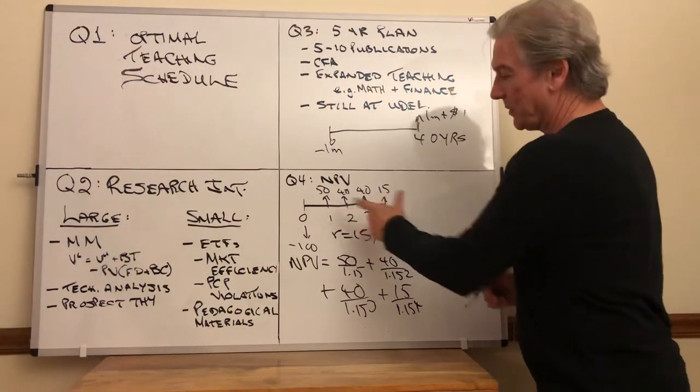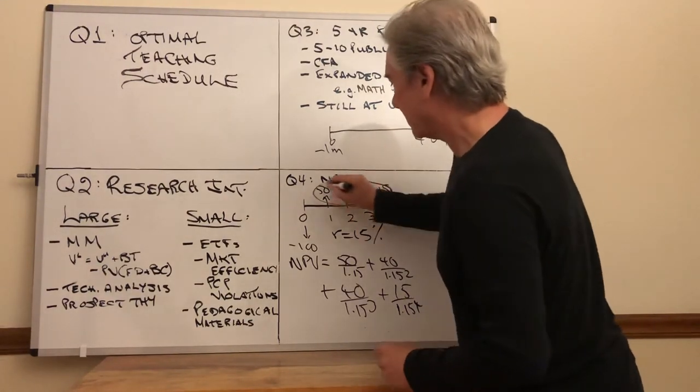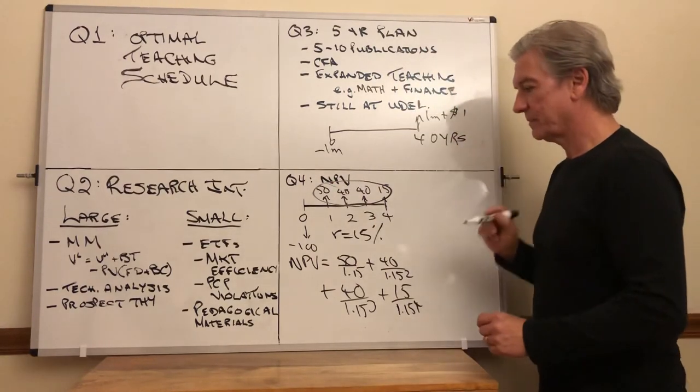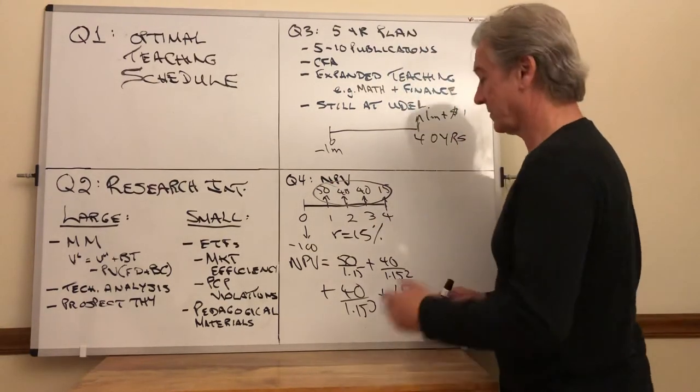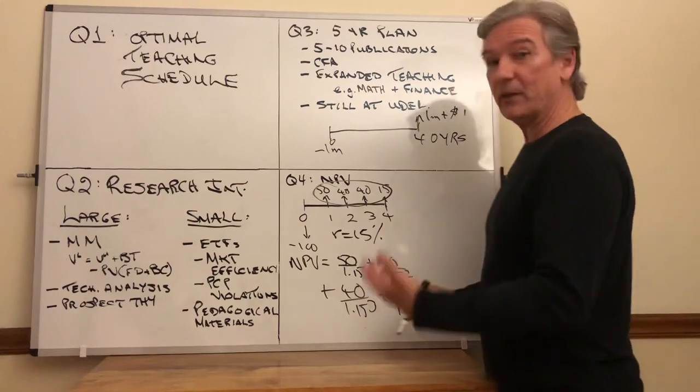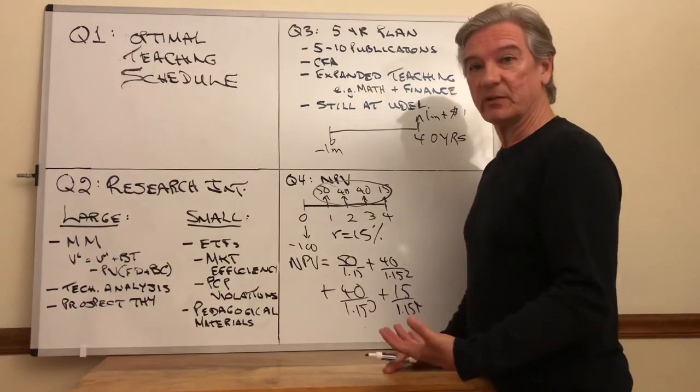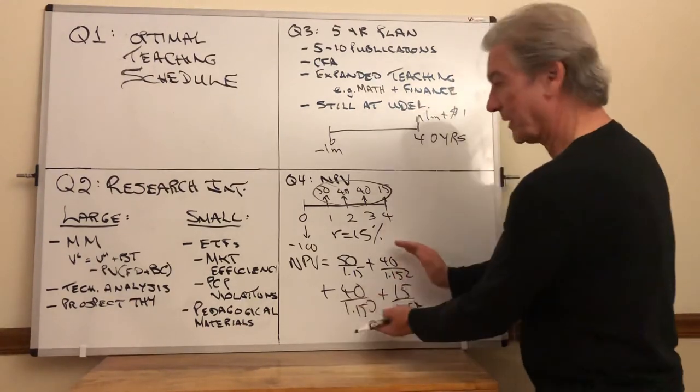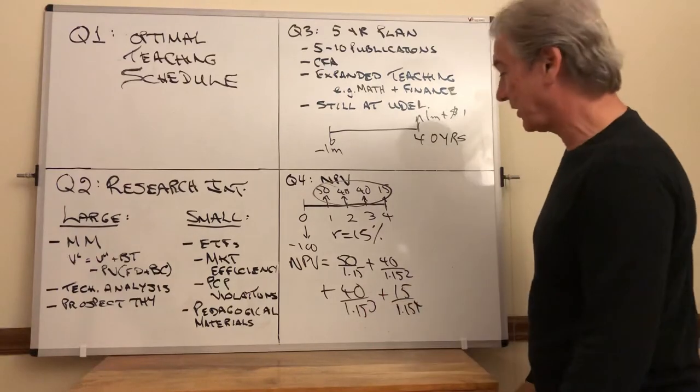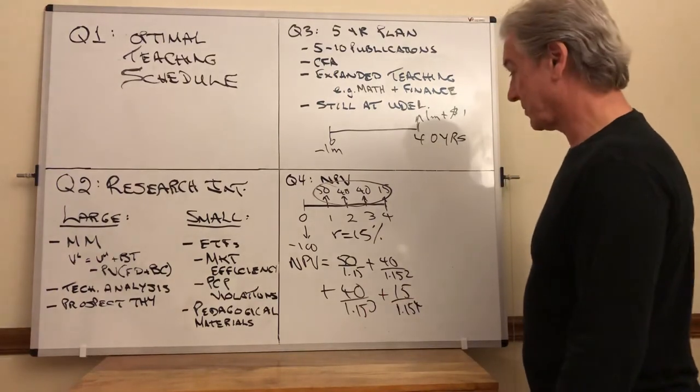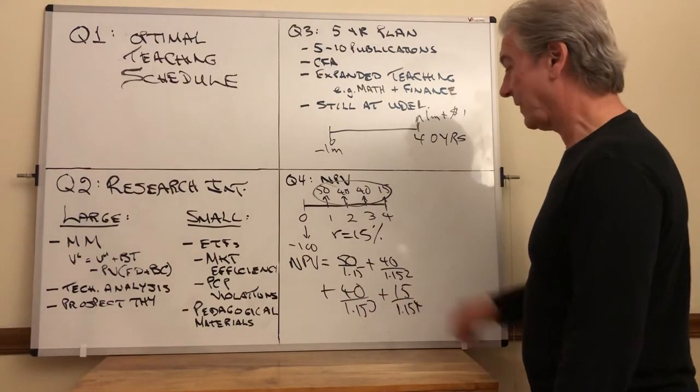That's just a straightforward application of time value of money. This is the present value of the future cash flows. And what we teach students is that the value of an asset is the present value of the future cash flows. Well, that's what we have right here. We have the present value of the future cash flows. That's the value.